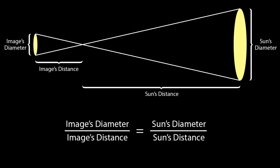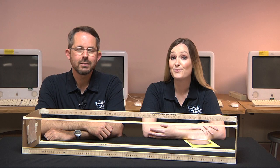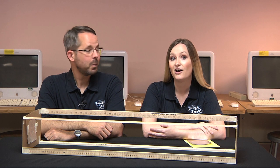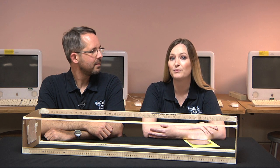Our image is about a centimeter across, and it's 100 centimeters away from the pinhole. If we knew the distance to the sun, we could figure out the sun's diameter. We do know the distance to the sun — on average, it's about 150 million kilometers away.